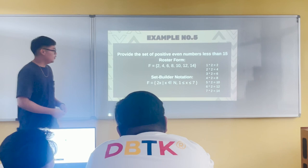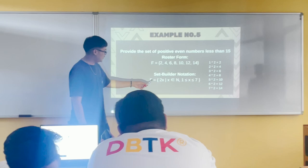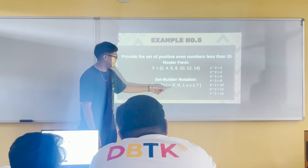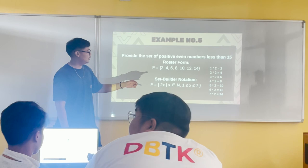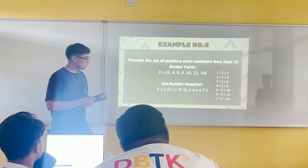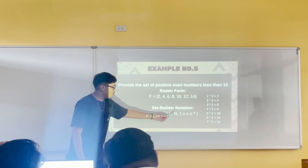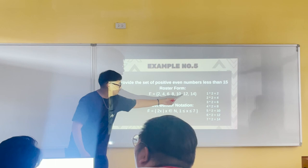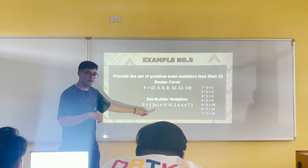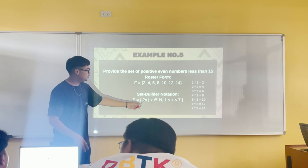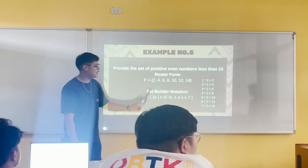For the set builder notation, we use 2x. Set F = {2x | x ∈ N, 1 ≤ x ≤ 7}. Why 2x? Because it is a simplified form — 2 times 1 is 2, 2 times 7 is 14. So: 2×1=2, 2×2=4, 2×3=6, 2×4=8, 2×5=10, 2×6=12, 2×7=14. This represents the set of all positive even numbers up to 14.